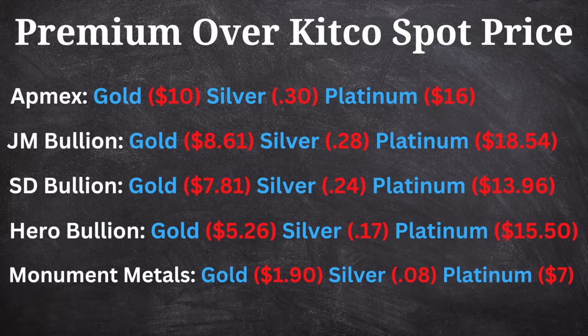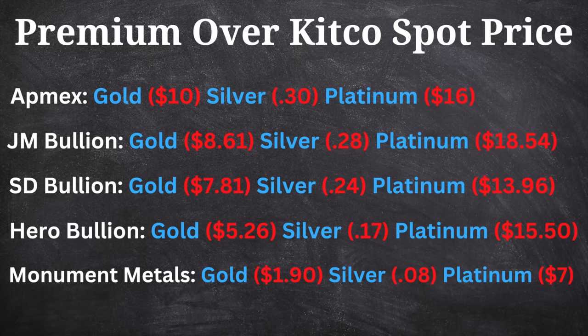With Apmex, you have an additional $10 for gold, $0.30 for silver, and $16 for platinum. For JM Bullion, gold is $8.61 over, silver is $0.28 more, and platinum is $18.54 more. SD Bullion has a premium of $7.81 for gold, $0.24 for silver, and $13.96 for platinum. Hero Bullion — who I've never shopped from, but I hear a lot of viewers talk about them — gold is $5.26 more, silver is $0.17 more, and platinum is $15.50 over. Monument Metals has the lowest premiums over Kitco spot price: $1.90 over for gold, $0.08 over for silver, and $7 over for platinum.